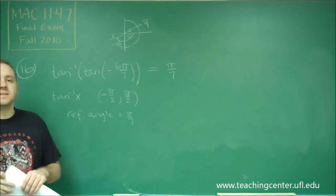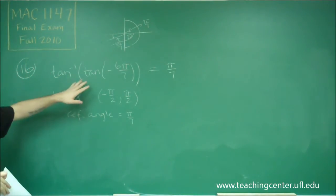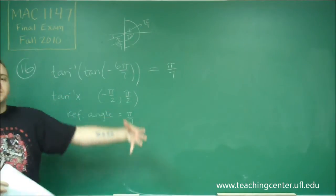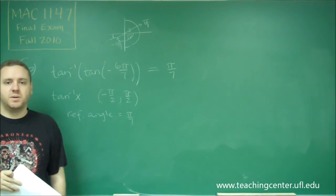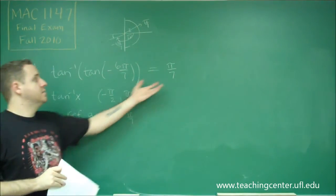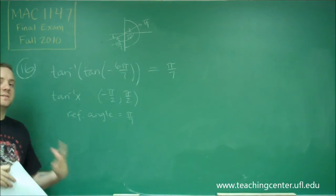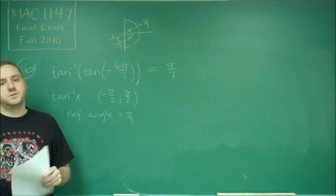So another way of looking at this is that this is asking you, what other angle can you take the tangent of, and it would give you the same answer as negative 6 pi over 7. That is pi over 7, and pi over 7 is the simplest answer to that question.